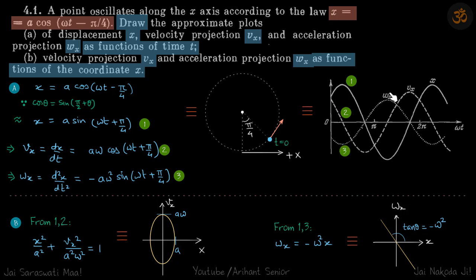You can see here also that when the position is maximum, then velocity is zero and acceleration is maximum and in negative direction.